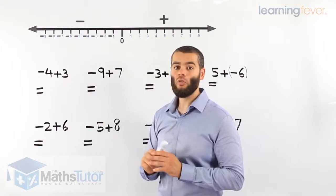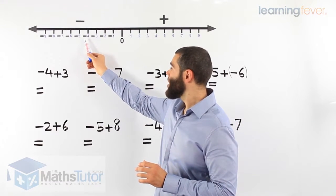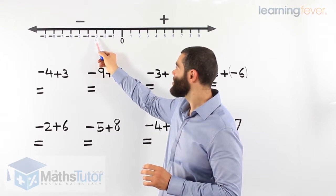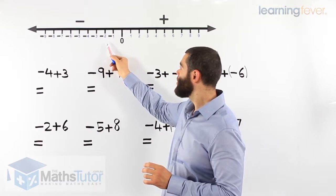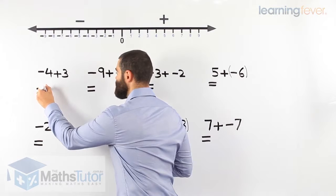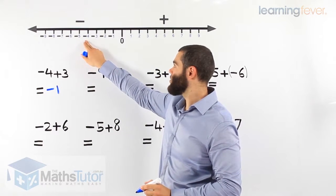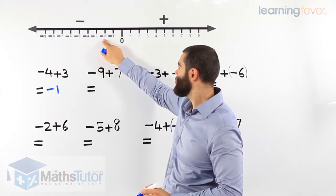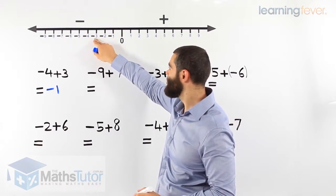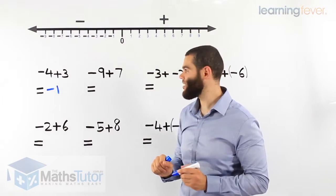Negative 4 plus 3. We start at negative 4 and we add 3 — we're going to the right because we're adding: 1, 2, 3. Our answer is negative 1. I'm counting the moves: 1 move, 2 moves, 3 moves. So negative 1 is our answer.